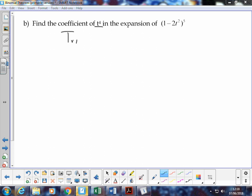So our r plus 1 term formula: n choose r, x to the n minus r, y to the power r. In this case here, n is 5, so we've got 5 choose r.